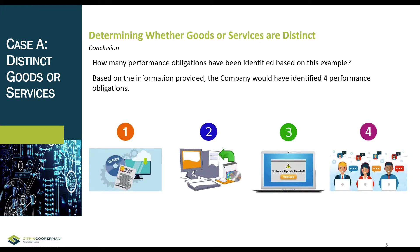To wrap up Case A: on the basis of this assessment, the company identifies four performance obligations in the contract — one, the software license; two, the installation service; three, the software updates; and four, the technical support — because each stood alone without needing to benefit from the others. The company will now need to determine whether each performance obligation for the installation service, the software updates, and the technical support is satisfied at a point in time or over time.